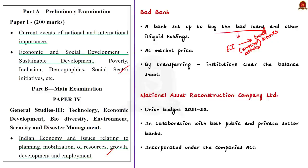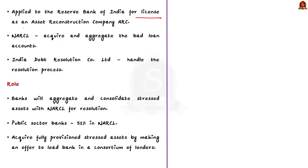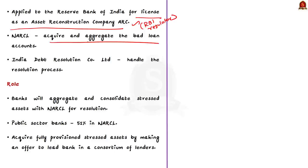The plan to form a bad bank to clean up banks' balance sheets was announced in the Union Budget of 2021. The new entity is being created in collaboration with both public and private sector banks. NARCL has been incorporated under the Companies Act and has applied to the Reserve Bank of India for a license as an Asset Reconstruction Company. Under the new structure, NARCL will acquire and aggregate the bad loan accounts from banks, while IDRCL will handle the resolution process under an exclusive agreement.